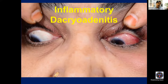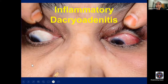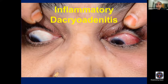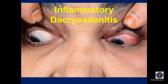Next is inflammatory dacryoadenitis. Inflammatory dacryoadenitis can be non-specific or specific, and may involve both orbital and palpebral lobes. It can be unilateral or bilateral. Inflammation can be acute, subacute, or chronic. Acute is mostly infective. Subacute and chronic could be specific or non-specific.